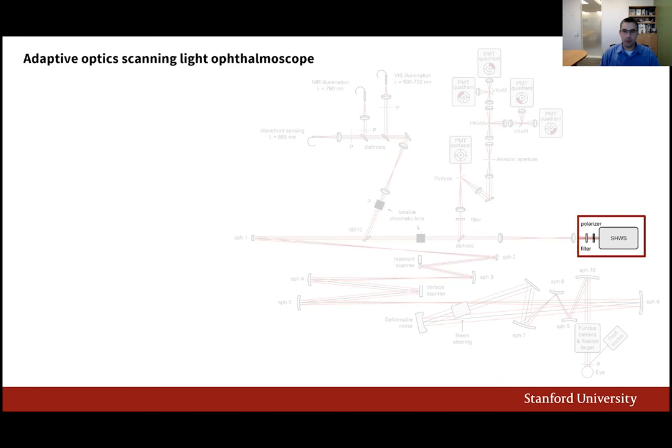A critical component of successful AO ophthalmoscopy is wavefront sensing. Although easy to implement and operate, this technology is not yet mature to the point that non-experts can obtain high quality images consistently. Moreover, it is not even clear that expert operators can deliver the full potential of this technology consistently.